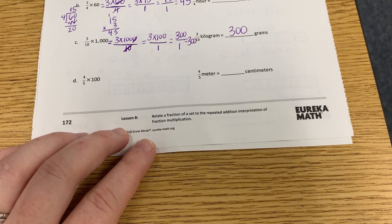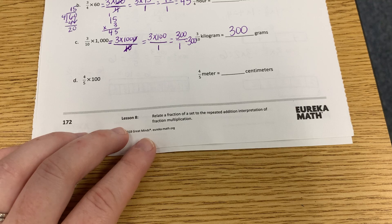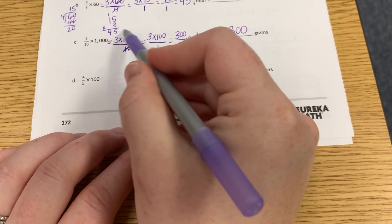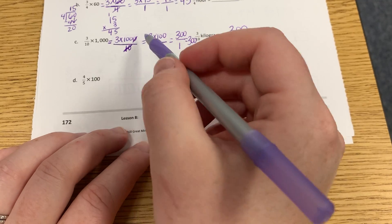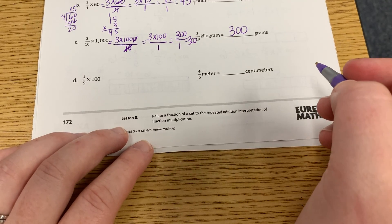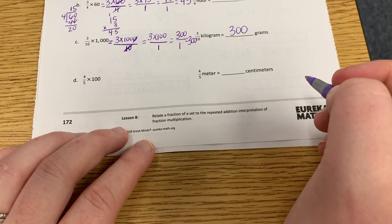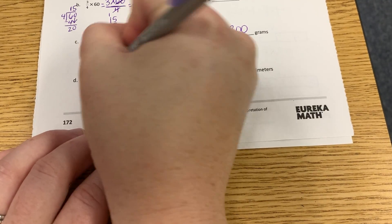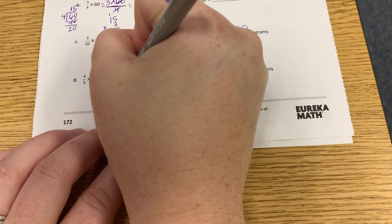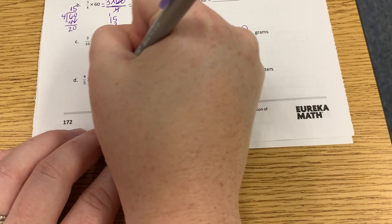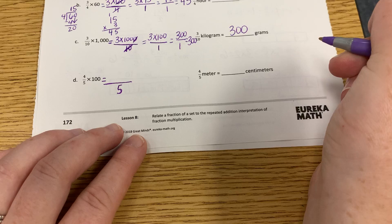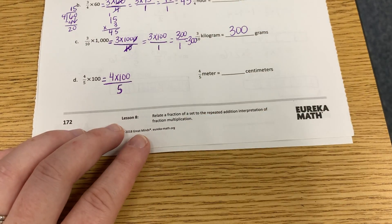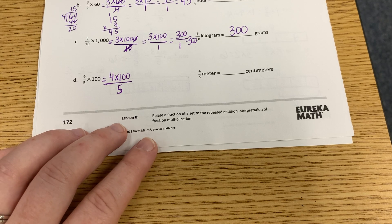Number or letter D, 4 fifths times 100. I want somebody to tell me what this whole first part, so the numerator and denominator would be. What the whole first part would be. Junior, go ahead. Keep 5 as the denominator. I like it. Perfect. 4 times 100. That was awesome. 4 times 100.